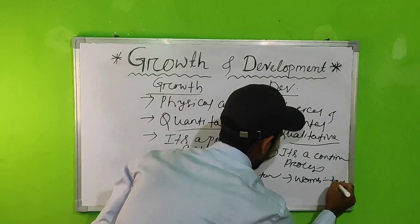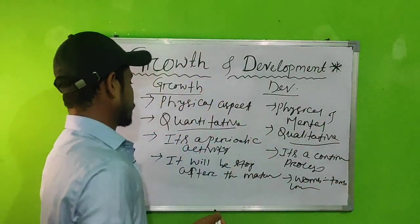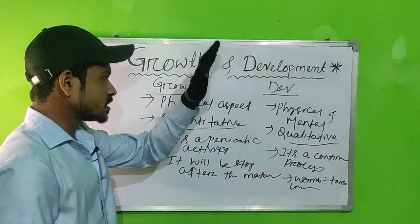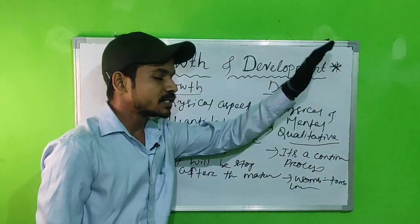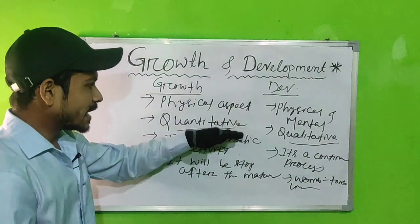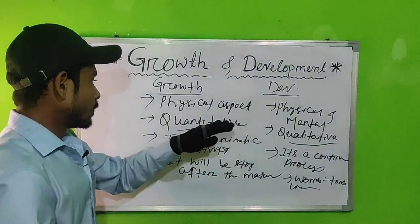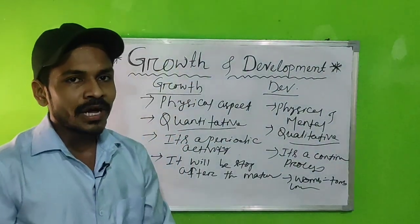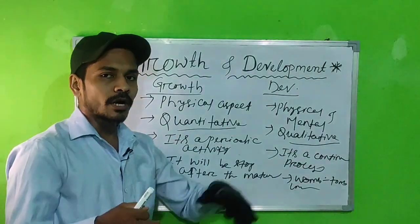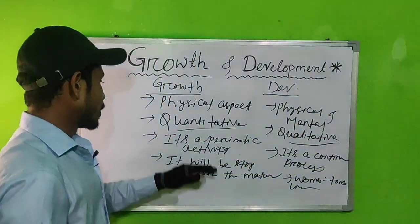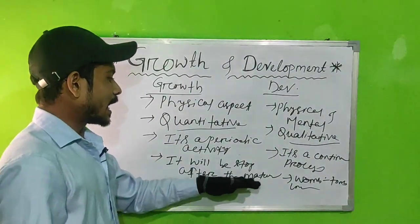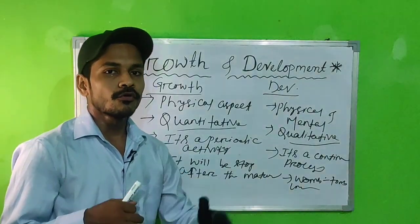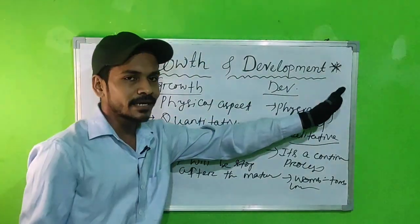To recap clearly: growth is a physical aspect, while development is a physical as well as mental aspect. Growth is a quantitative process, development is a qualitative process. Growth is a periodic activity, but development is a continual process which continues throughout life, starting from the womb and ending at the tomb. Growth stops after maturity.